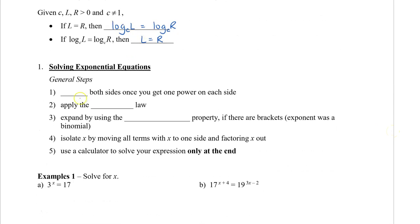The general steps start off with logging both sides, once you have an expression on each side of the equal sign. Next, apply the power law so that you move the exponent to be the coefficient in front of the log. Then expand using the distributive property if there are brackets — you'll get brackets when the exponent is a binomial. Finally, isolate X by moving all terms with X to one side and factoring X out to get a single X. Use your calculator only at the end to avoid rounding errors.